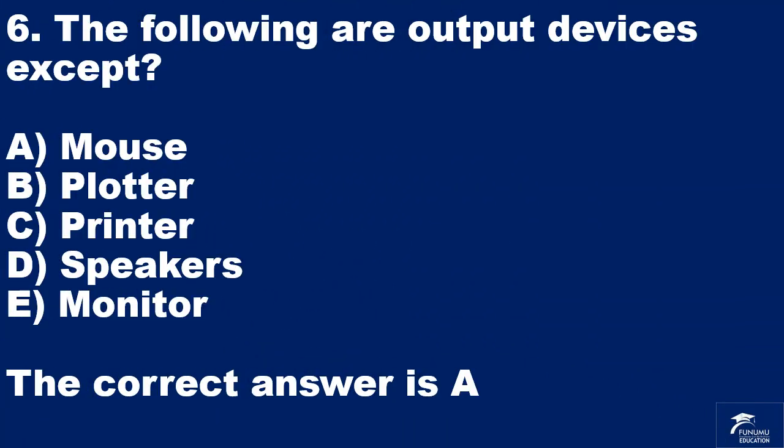Question 6. The following are output devices except: A: mouse. B: plotter. C: printer. D: speakers. E: monitor. The correct answer is A.